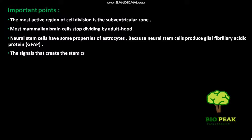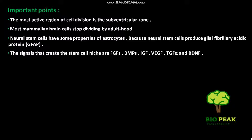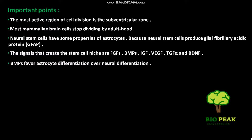The signals that create the stem cell niche are FGFs, BMPs, IGF, VEGF, TGF-alpha, and BDNF. BMPs favor astrocyte differentiation over neural differentiation.